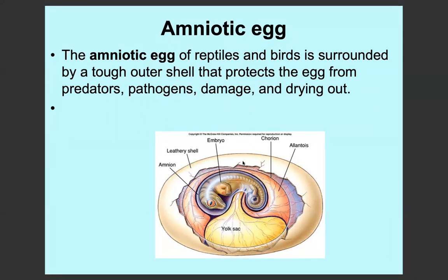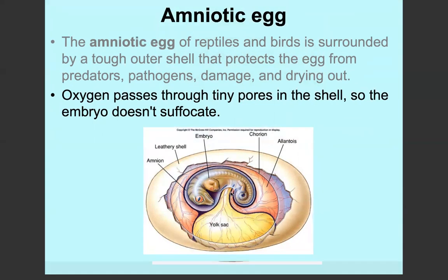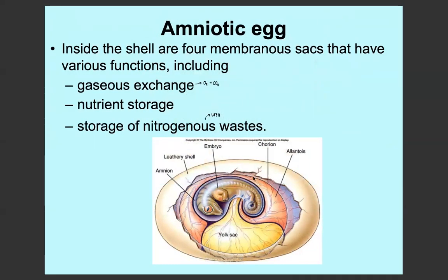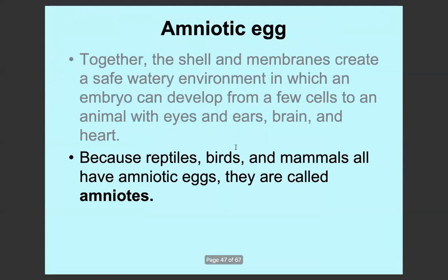Oxygen passes through tiny pores in the surface of the shell, so the shell is permeable to gases, which stops the embryo from suffocating. Inside the shell there are four membranous sacs with functions like gaseous exchange, nutrient storage, and storage of nitrogenous waste such as urea. The yolk sac is an example of the sac that provides nutrient storage. Together, the shell and the membrane create a safe, watery environment in which an embryo can develop from a few cells to an animal with eyes, ears, a brain, and a heart. Because reptiles, birds, and mammals all have amniotic eggs, we call them amniotes.